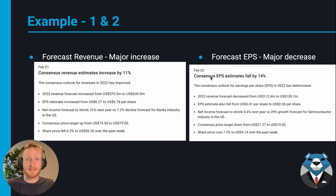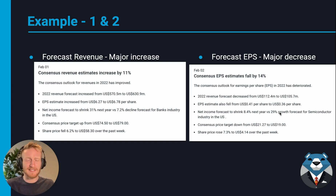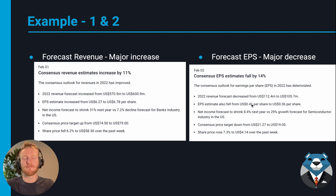The second example — a forecast EPS decrease — shows the consensus EPS estimates falling by 14%. The 2022 revenue forecast decreased from $112 million to $105 million, and EPS estimates fell from $0.41 to $0.36 per share. Net income is forecast to shrink 8.4% next year versus a 29% growth forecast for the semiconductor industry in the US — a stark contrast. This stock is expected to see earnings decline while the industry is expected to grow nearly 30%, suggesting there may be better opportunities in the sector.